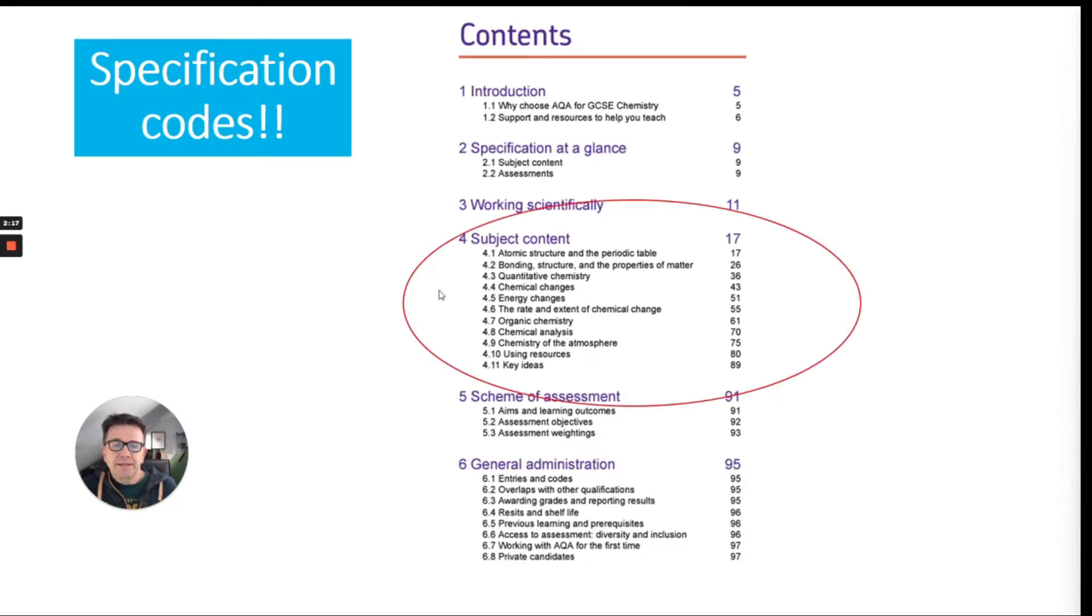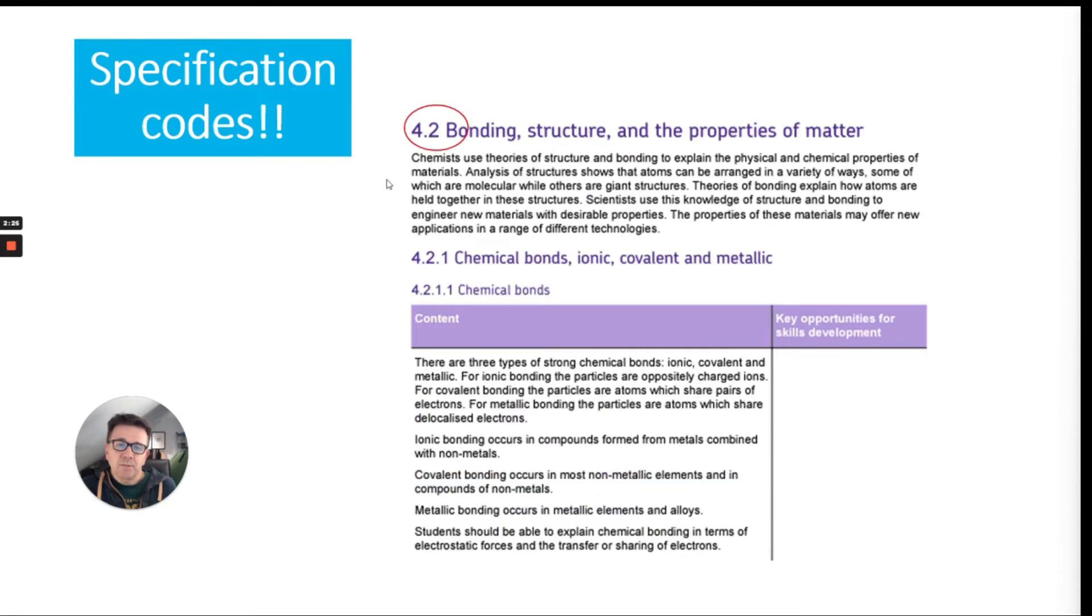You'll notice when you look at it that it has subject content. So this is all the subject content that you might be asked to learn. And then you can see what we mean by spec code. So spec code 4.2 and then 4.2.1 and what it is and what you need to learn for chemical bonds for example.